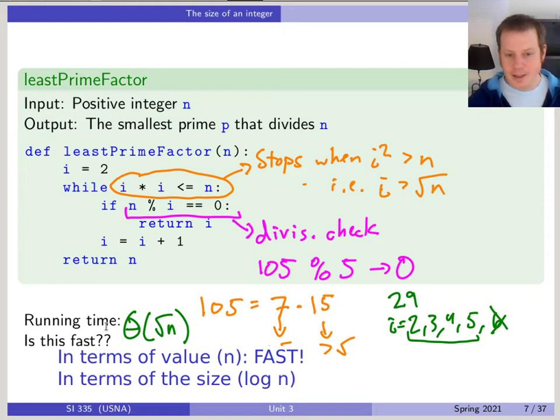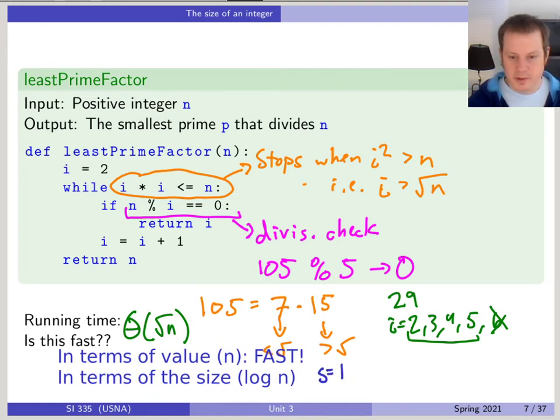If I wrote s equals log of n, let's do some math here for a second. If I write s is the size, so s equals log base two of n, or ceiling of log base two of n, but I'll just say log base two of n, then what is square root of n? You can figure this out. So if s is log n, then n is two to the power s. And so that means that square root of n is this to the power one half. So it's two to the s divided by two.